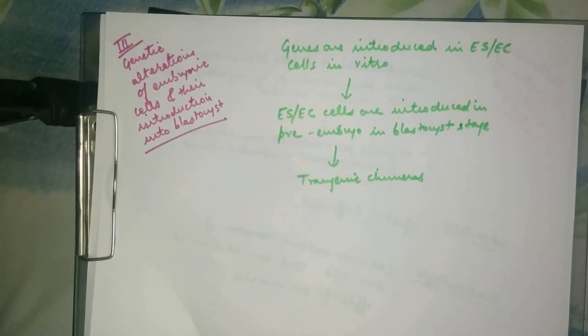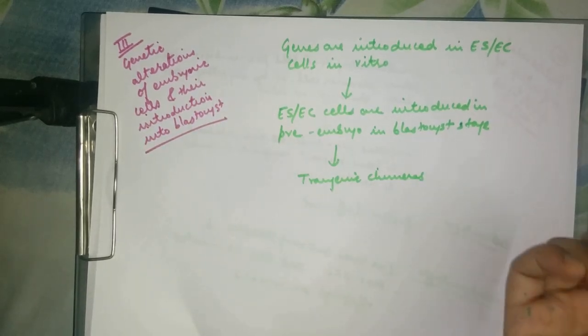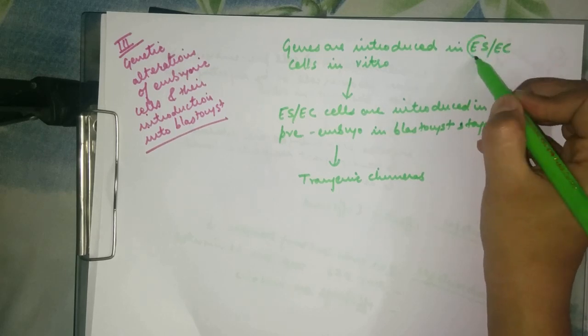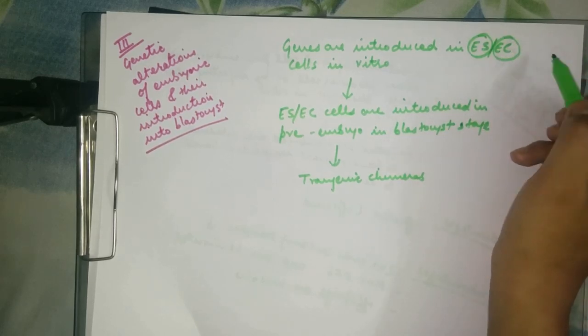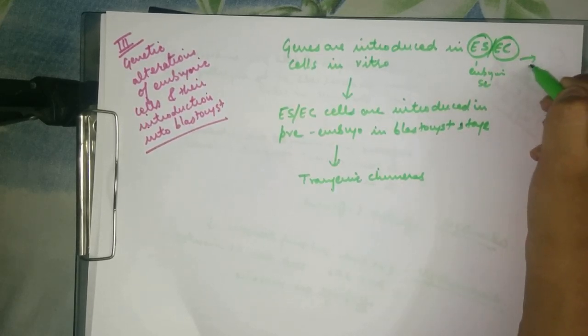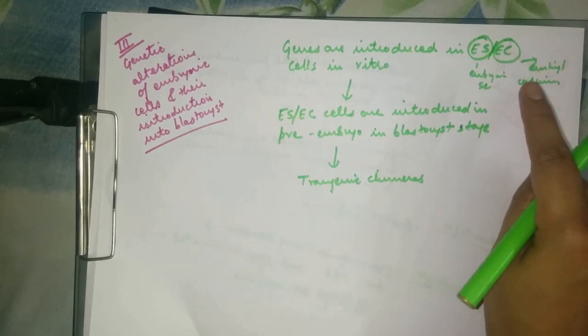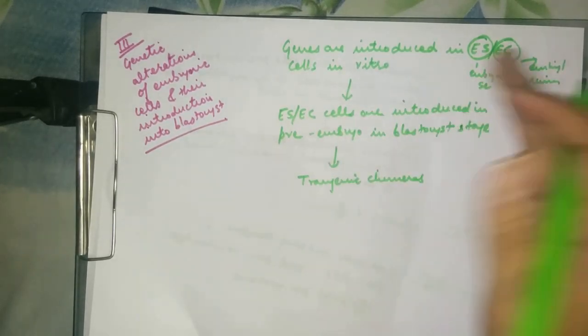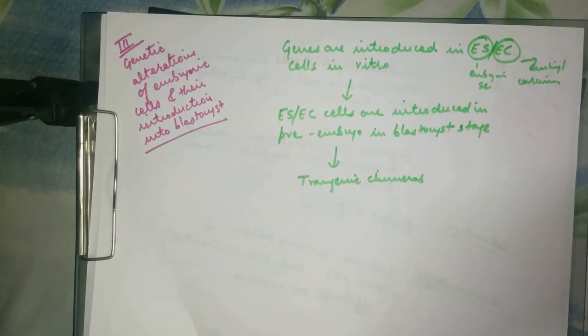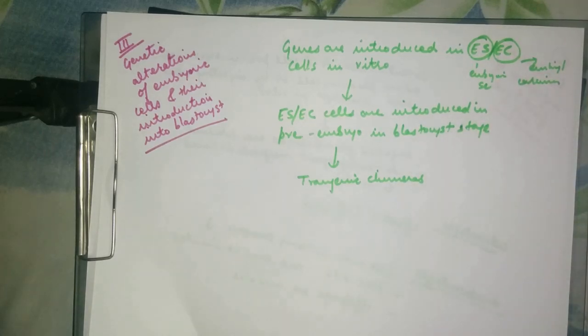The third method is the genetic alterations of embryonic cells and their introduction into the blastocyst. We use two types of cells in this method: embryonic stem cells and embryonal carcinoma cells. The embryonic stem cells contribute to the germ cells and colonize in the germ cells more efficiently than embryonal carcinoma cells. These embryonal carcinoma cells do not form germ cells, and their efficiency of colonizing the blastocyst is extremely less.